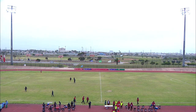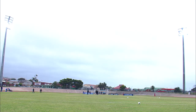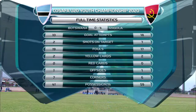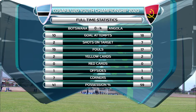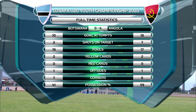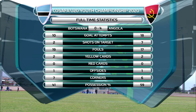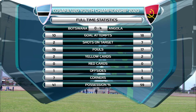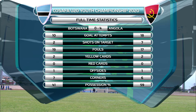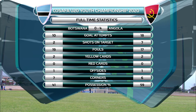In what has been an exciting game that delivered four goals, it really has been Angola asking the questions — 18 goal attempts, seven of them on target, four landing into the back of the net. They really controlled ball possession for much of the game, with a 59-41 possession split.